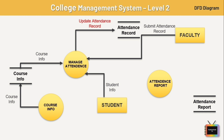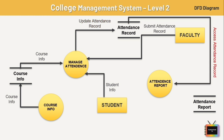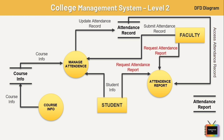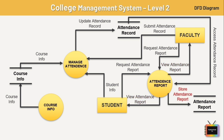The attendance records are accessed by the attendance report process. Whenever a student or faculty wants to access the attendance report, they send a request to generate the report, and after that they can view the attendance report. The same is updated in the attendance report database. This is how you can draw different DFD diagrams on different topics.